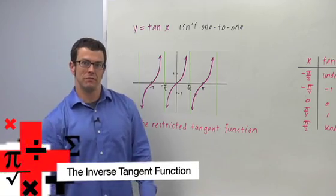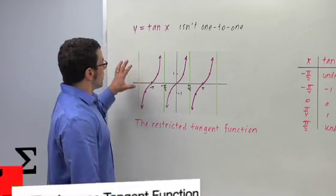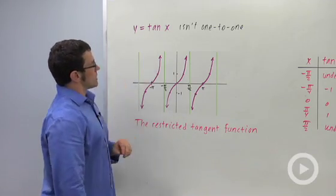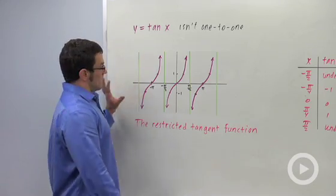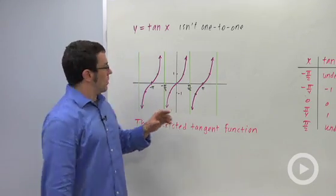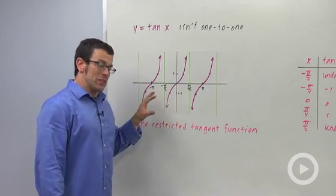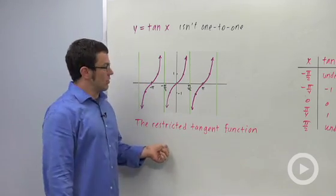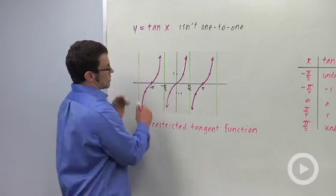I want to introduce the inverse tangent function. We start with the tangent function y equals tan x. You'll notice that the tangent function is very much not one-to-one. So in order to be able to invert this function, we first have to restrict its domain to a portion that is one-to-one.